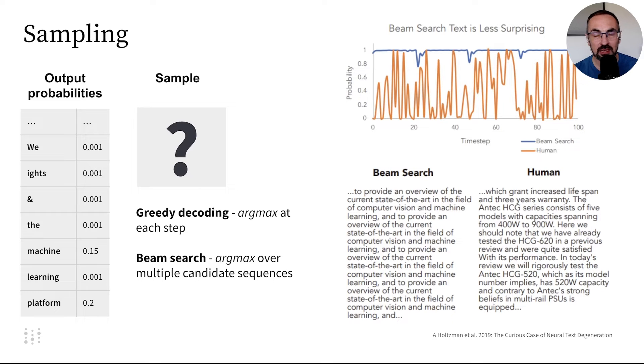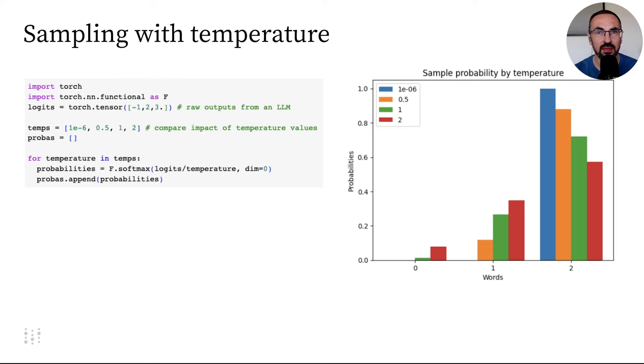So we need alternative sampling methods. One option is called sampling with temperature. Adjusting temperature affects token probabilities, with higher values resulting in more diverse outputs.